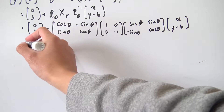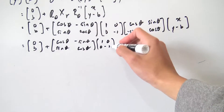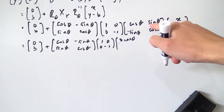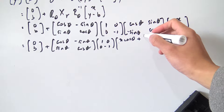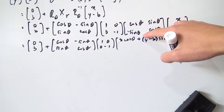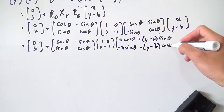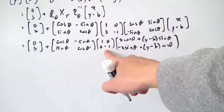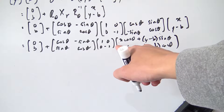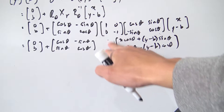Let's multiply these two matrices together. We get (0, b) plus: in our top row, x cos theta plus (y - b) sine theta; and for our bottom row, negative x sine theta plus (y - b) cosine theta. Now we multiply in the Xr matrix. The top row stays the same, and the bottom row we multiply by negative one — removing the negative sign and turning the plus into a minus.